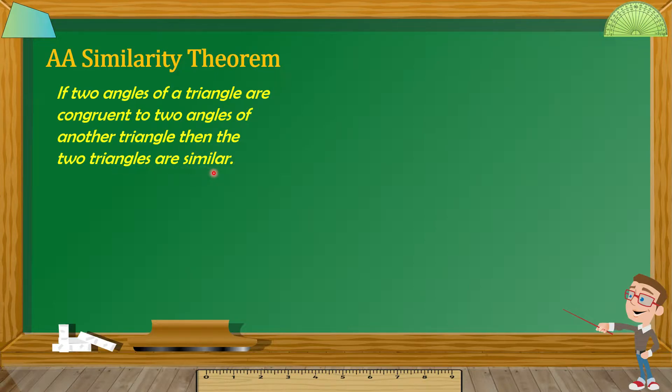Ibig sabihin nyan is, kapag yung dalawang angles ng isang triangle ay congruent sa dalawang angles ng another triangle, then yung dalawang triangle na yun, masasabi natin na similar sila. By AA Similarity Theorem — basta dalawang angles lang yung congruent doon sa dalawang triangle, masasabi natin na they are similar triangles.